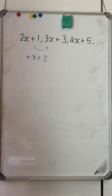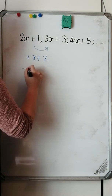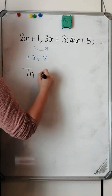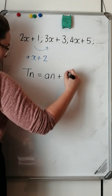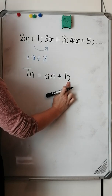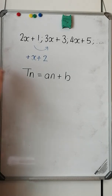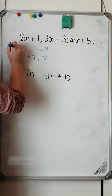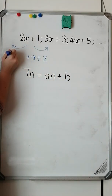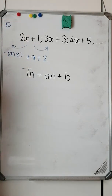Question 1.2 asks me to write the formula for the general term of the sequence. Since I'm adding the same thing each time, this is an arithmetic sequence, so my formula would be an plus b, where a is the constant difference, which is what we've worked out, and b is term 0. So instead of adding x plus 2, I need to subtract x plus 2 from the first term to get my term 0.